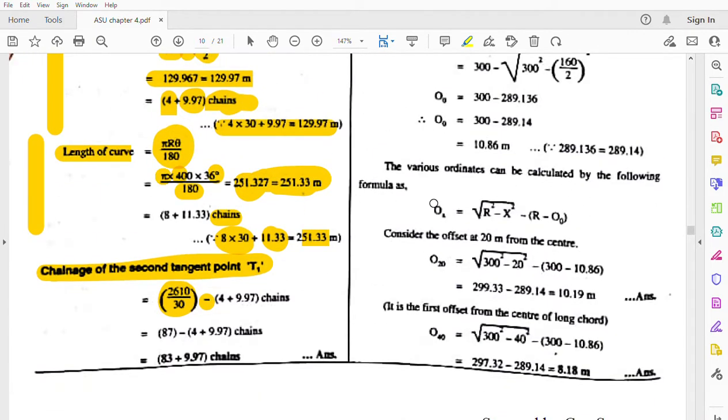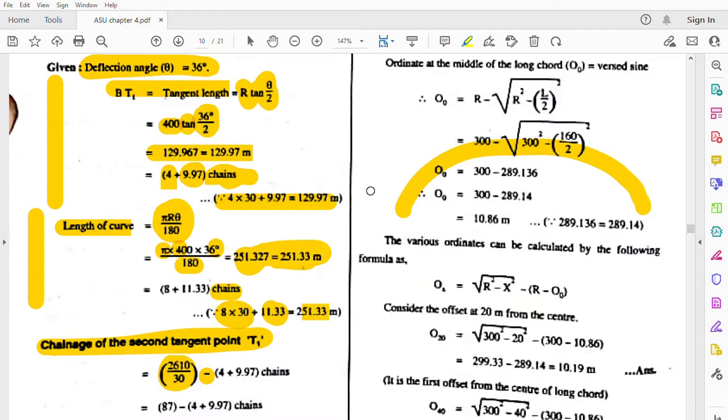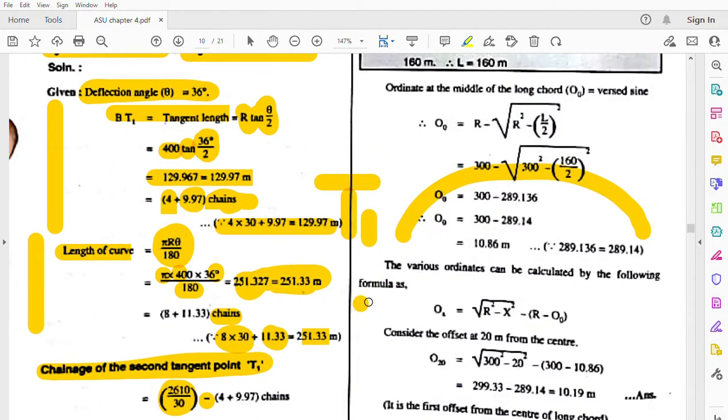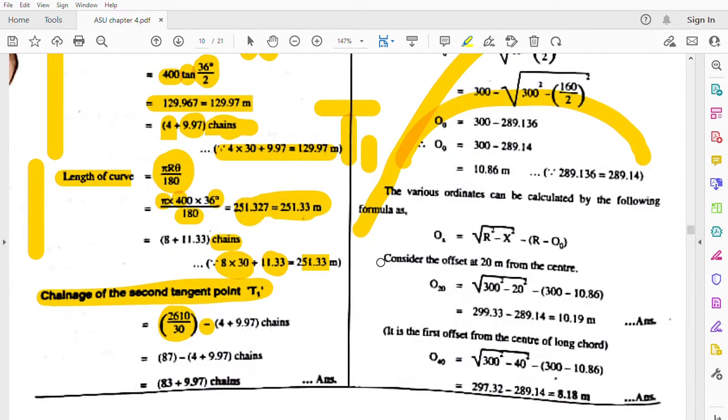See, this BT1 length, this tangent length BT1, we will subtract it. Let me explain this a bit. The curve happens this way. This is T1, this is the tangent.